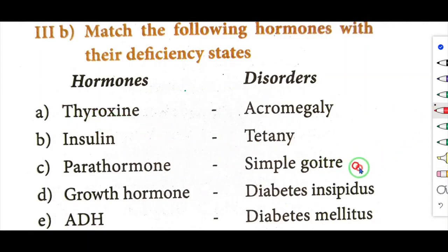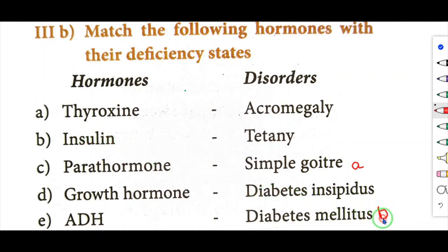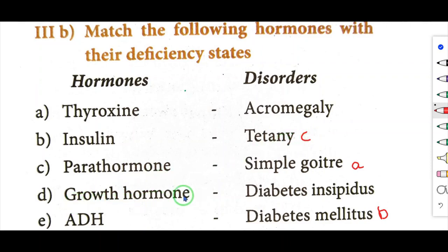Match the following: thyroxin deficiency — simple goiter; insulin deficiency — diabetes mellitus; parathormone deficiency — tetany; growth hormone deficiency — acromegaly.